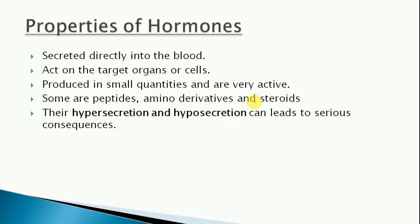The properties of hormones: first, they are secreted directly into the blood from the endocrine glands. Second, they act on the target organs or cells. Third, they are produced in small quantities but are biologically very active - their small quantity can make a huge difference.